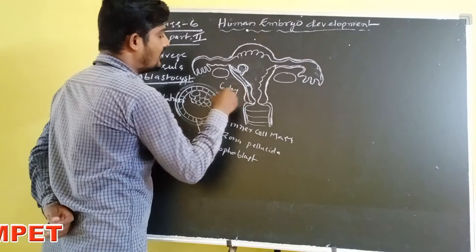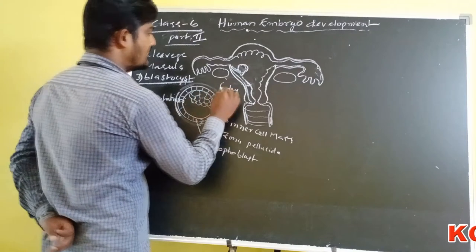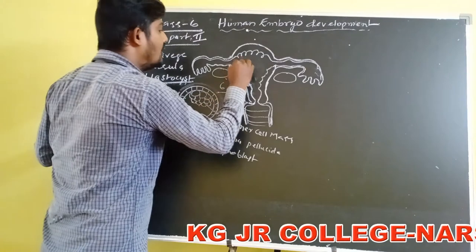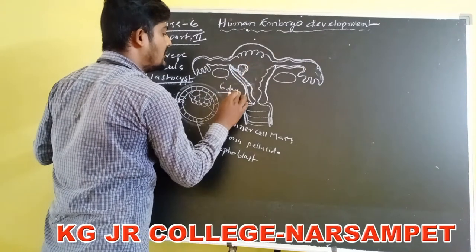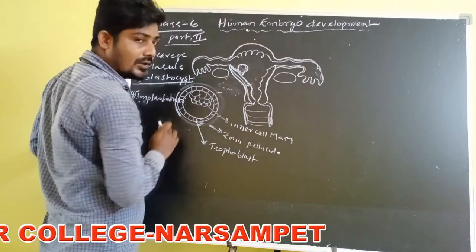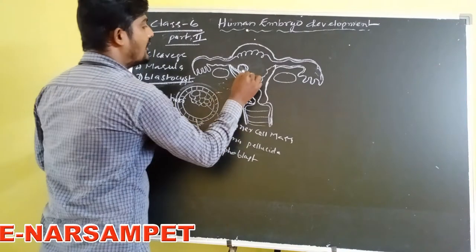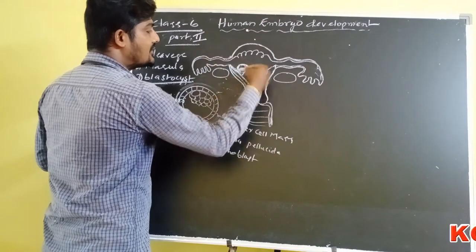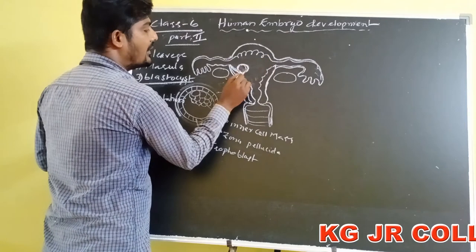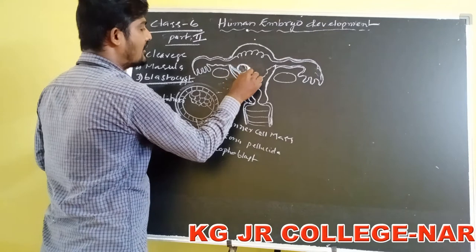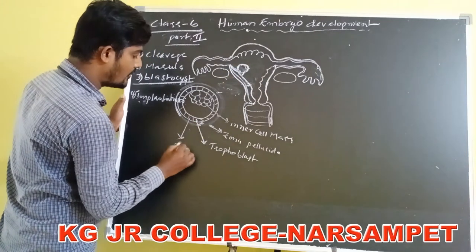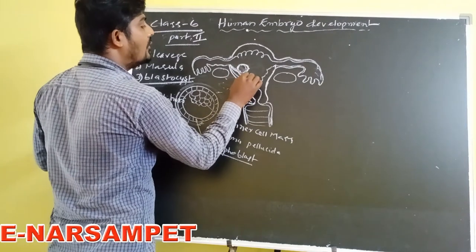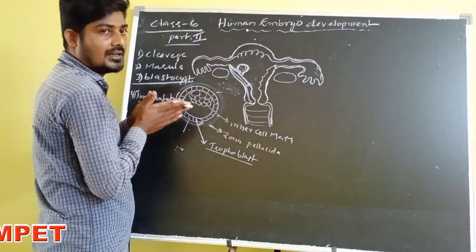In the implantation process, some proteolytic enzymes are involved. These proteolytic enzymes help the embryo stick and invest into the endometrium of uterus. These proteolytic enzymes arise from the trophoblast and are also produced from the lumen of the uterus, and they are involved in implantation.